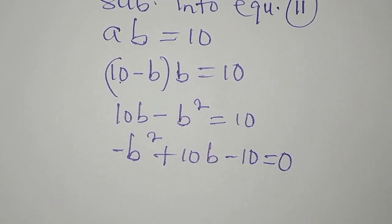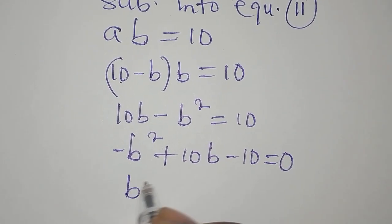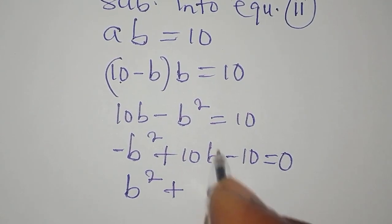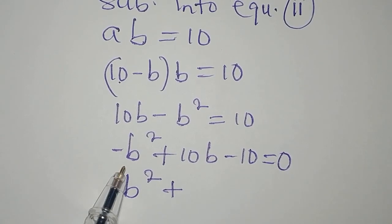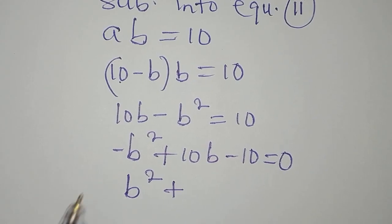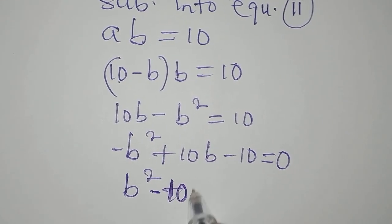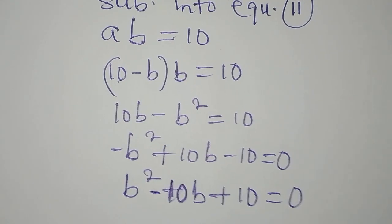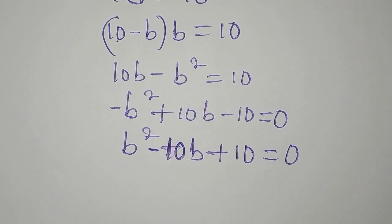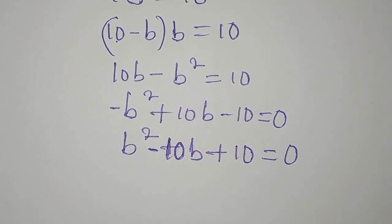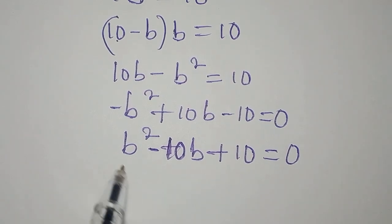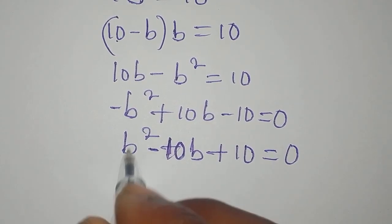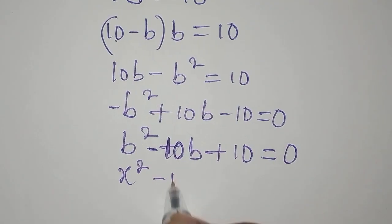To remove the negative, we multiply through by -1 to make the leading term positive. This becomes b² - 10b + 10 = 0. We're going to use the quadratic formula for this. Let me rename the variable as x, so the equation becomes x² - 10x + 10 = 0.